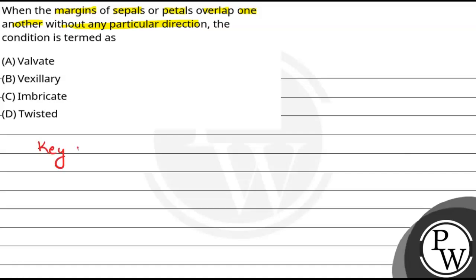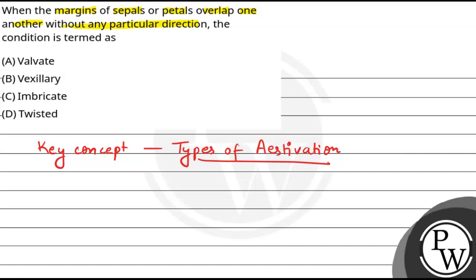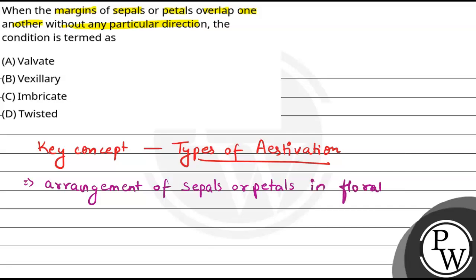To answer this, we need to talk about the concept of types of aestivation. Aestivation is basically the mode of arrangement of sepals or petals in the floral bud. Now let's go through the types of aestivation.